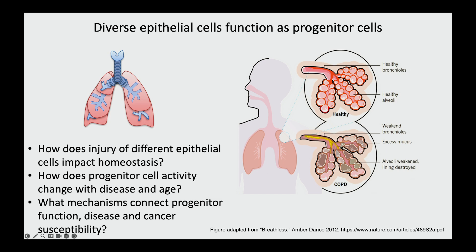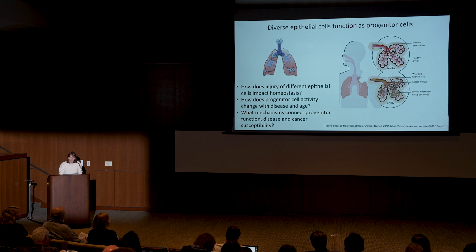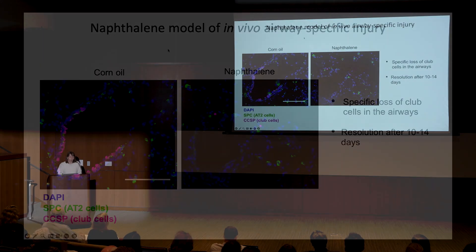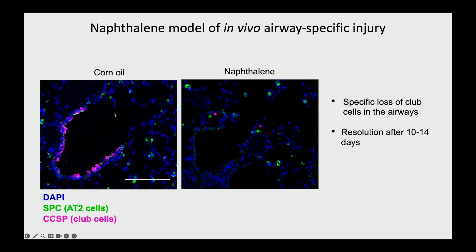In the first part of the talk, I'll focus on how we started to think about this, especially in relation to COPD. COPD contains features of both an abrogated airway, such as remodeled airways, as well as a diminished alveolar space. In order to begin to ask about this, we decided to make use of a very simple system in the mouse — the injury model called naphthalene. Naphthalene is an airway cell-type specific injury. You can see in the corn oil control mouse that club cells are normal, whereas in a naphthalene-treated mouse the club cells have been killed off, but a normal mouse can repair this injury in 7 to 14 days.